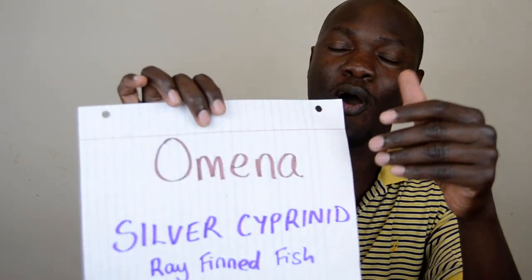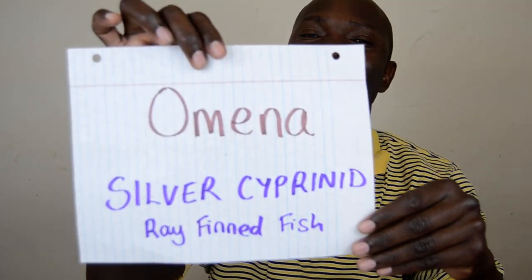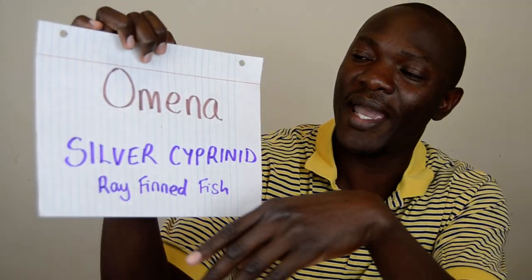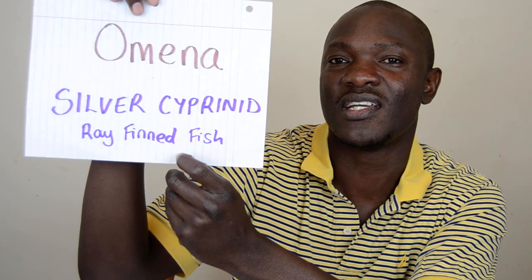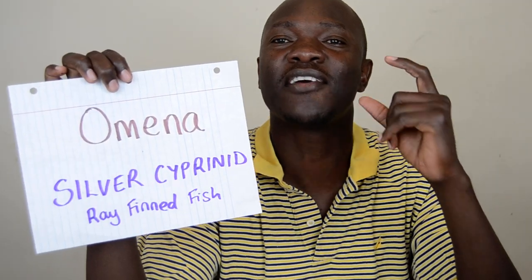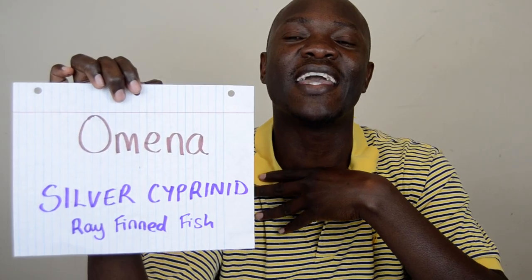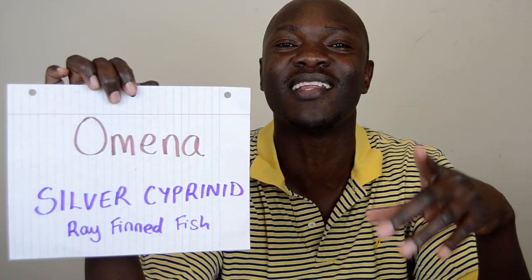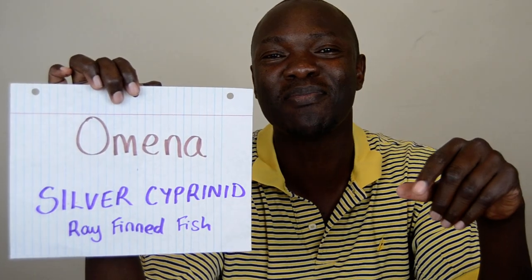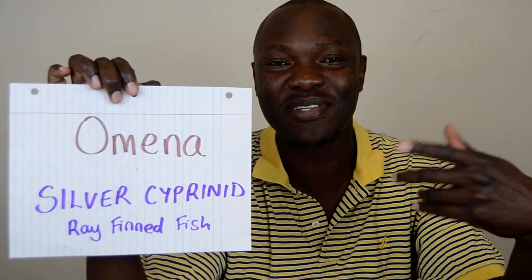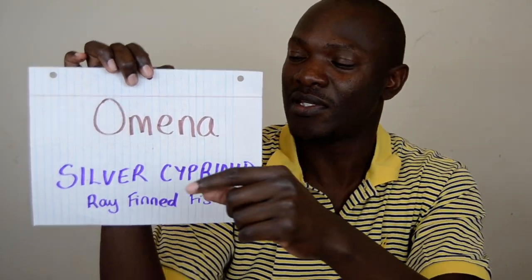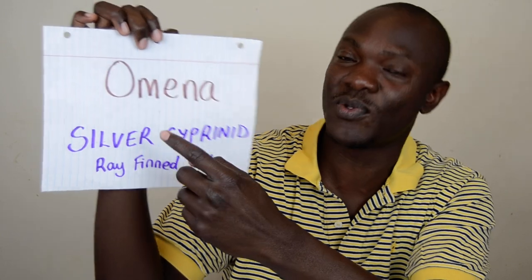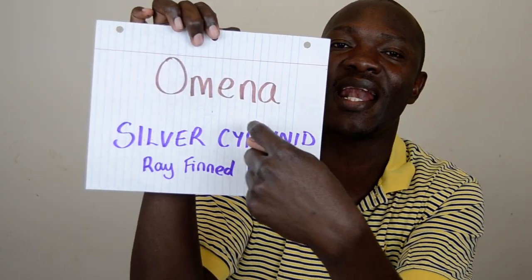The next one is Omena. Omena is silver cyprinid, or ray-finned fish. It's a very common type of fish — I ate this fish all my life and I still sometimes get it from home. It's a very sweet type of fish. That is ray-finned fish, which is Omena.